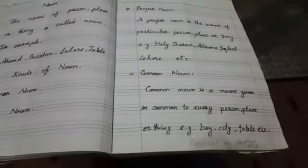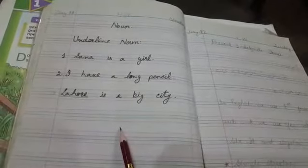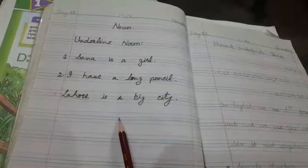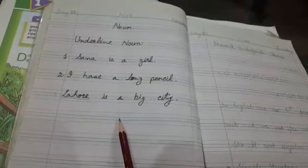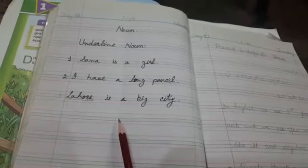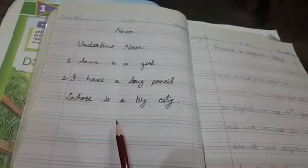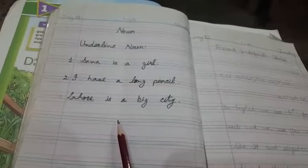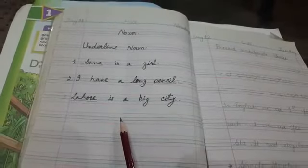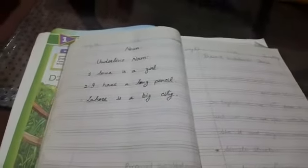A common noun is a name given in common to every person, place, or thing — like boy, city, and table. Here are three practice sentences you will also do on your notebook: fill in the blanks and underline the noun. Sana is a girl — here Sana is a noun, so you will underline this word. I have a long pencil. Lahore is a big city.